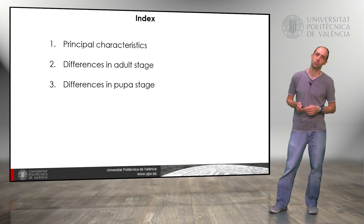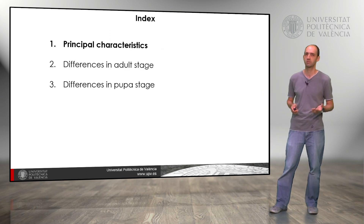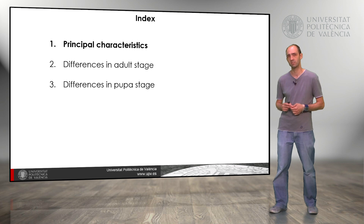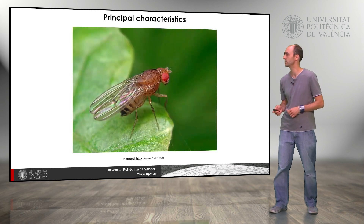We are going to follow this index: principal characteristics, differences in adult stage, and later in pupa stage.